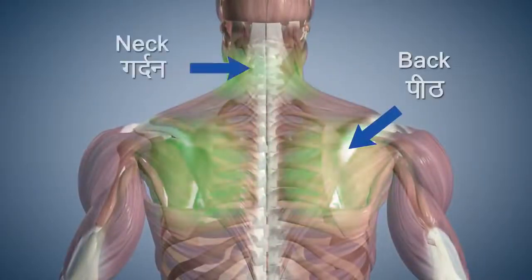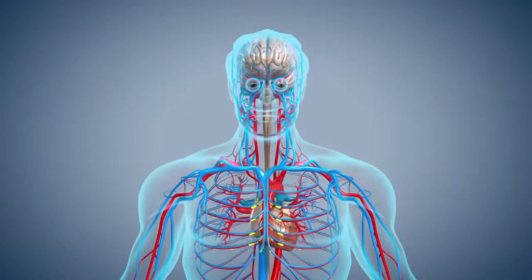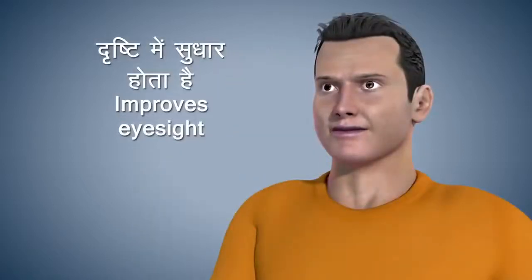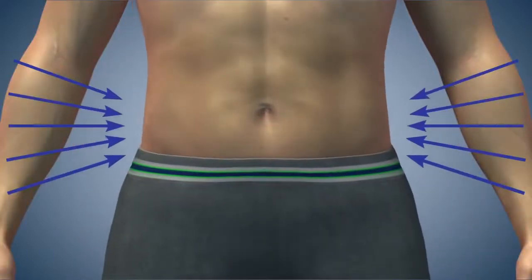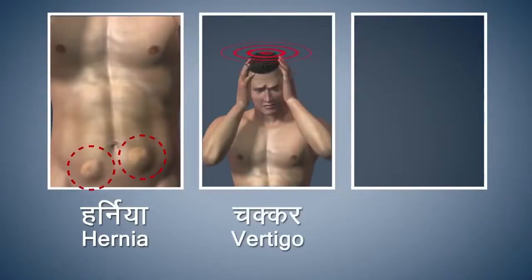Ustra Asana strengthens the muscles of your back and neck. This asana improves the blood circulation in your head and chest. Performing this asana also improves your eyesight. It helps in reducing the fat on your stomach and hips.